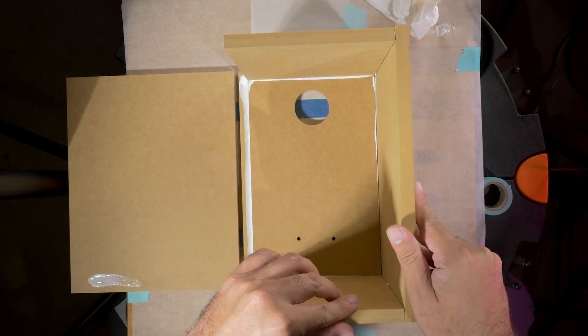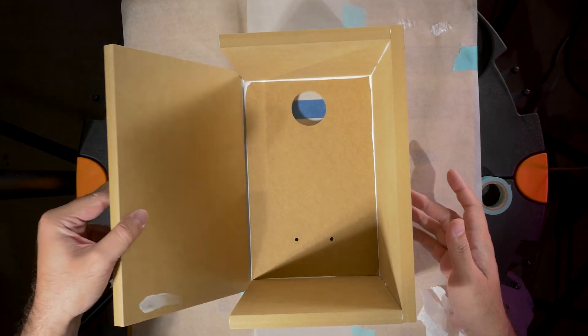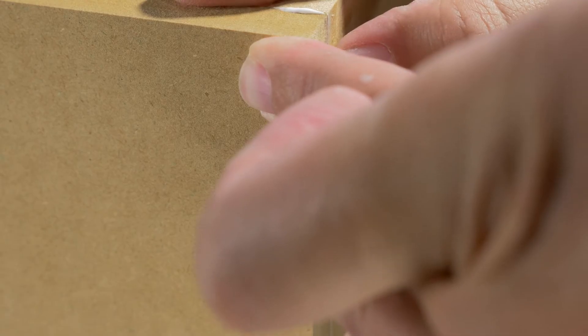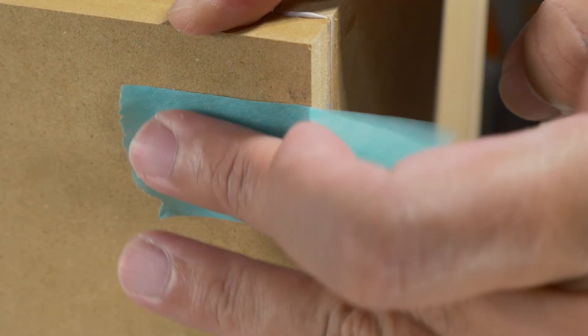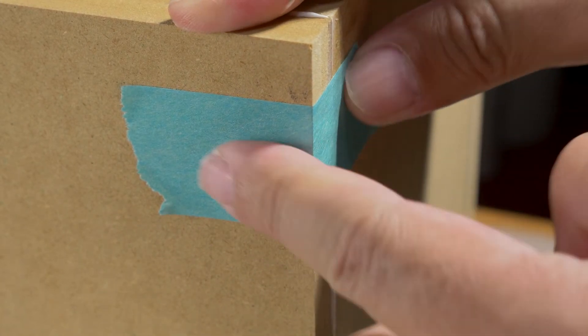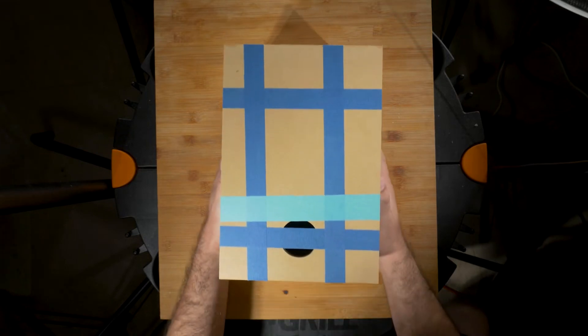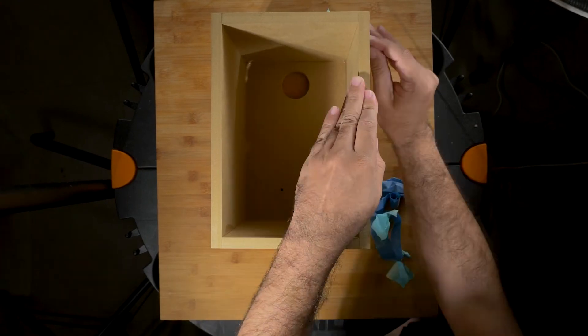Now we're going to go ahead and lay up all of our sides and you'll see a bunch of squeeze out. Go ahead and wipe that down and then put in some extra pieces of masking tape just to make sure that things are nice, tight and square. After your glue has cured, it's time to remove all the masking tape and move on to wiring in your crossover.